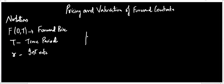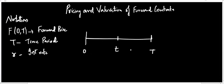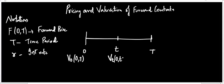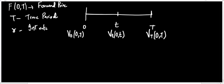Now let me consider another case here. This is time 0, this is maturity, and this is some arbitrary point between time 0 and maturity represented by time t. We can calculate the value of the forward contract at initiation, at any time between the beginning and maturity, and also at maturity. Let me also note down the spot price.